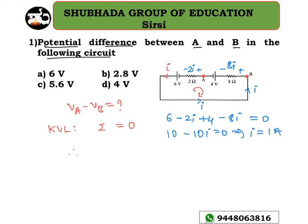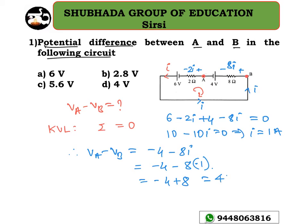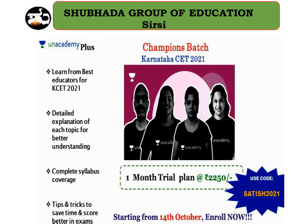Therefore, Va minus Vb equals minus 4 volts minus 8 times I. Since the direction of the current is reversed here, I is taken as minus 1 ampere. So that gives minus 4 plus 8, which equals 4 volts. So option D is the right answer — 4 volts.